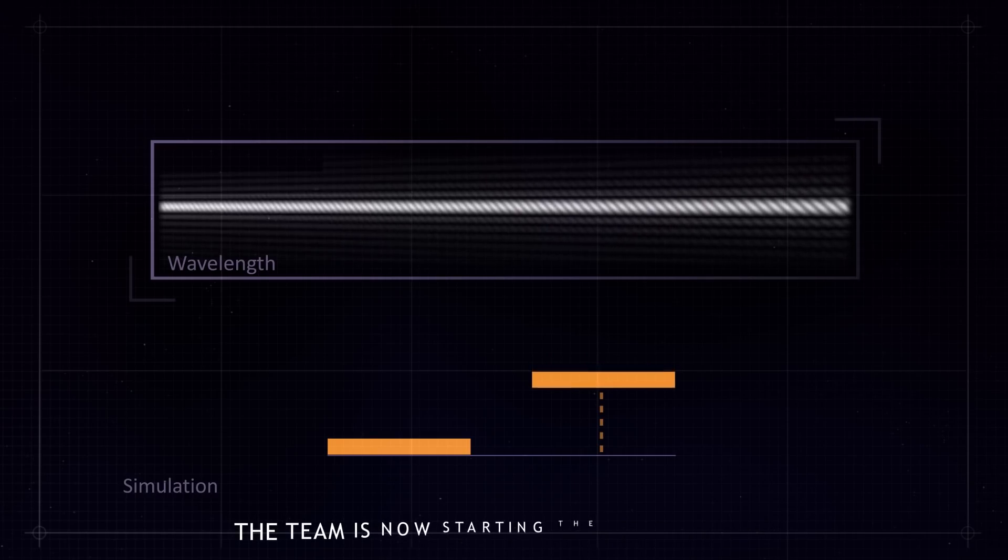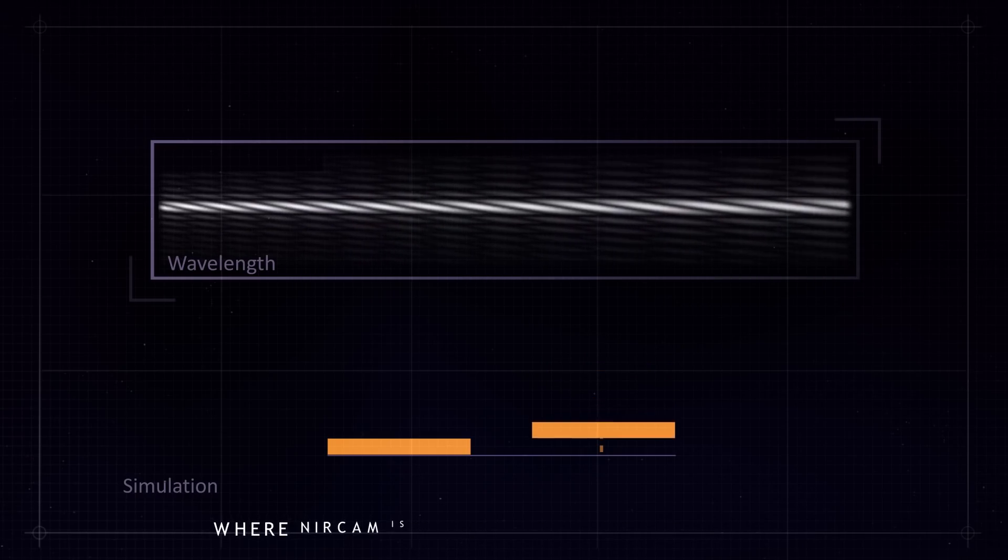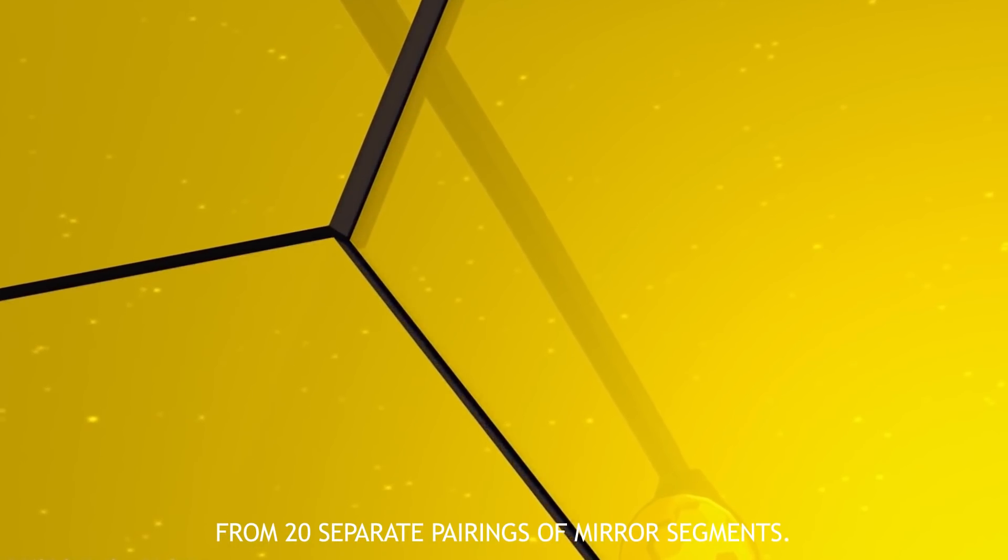The team is now starting the fourth phase of mirror alignment, known as coarse phasing, where NIRCam is used to capture light spectra from 20 separate pairings of mirror segments.